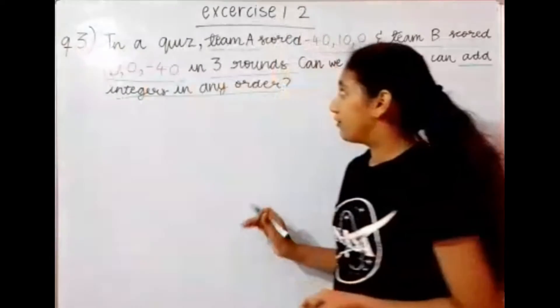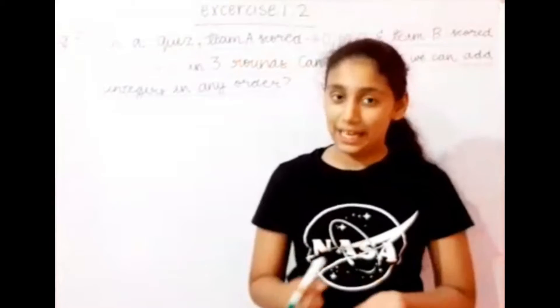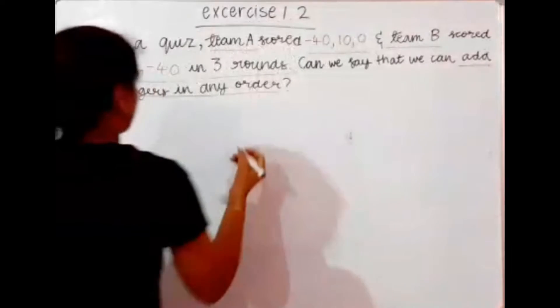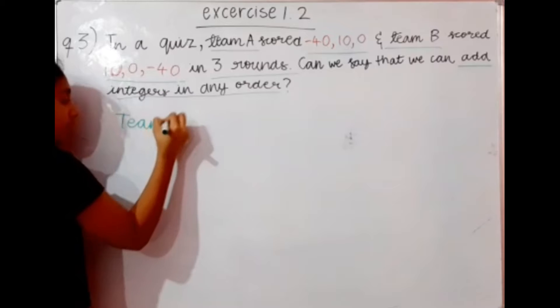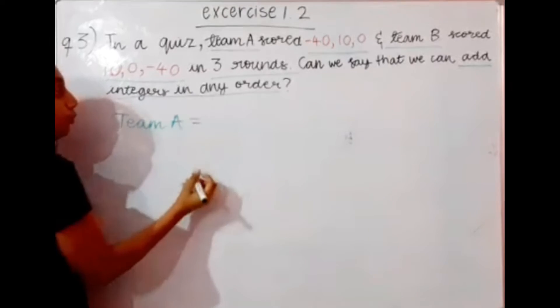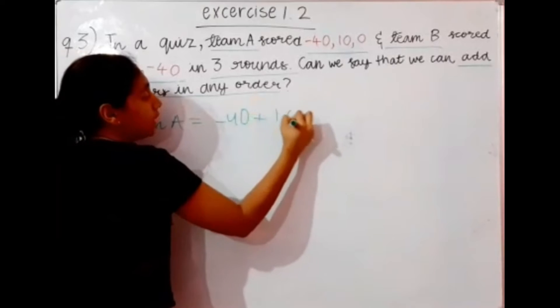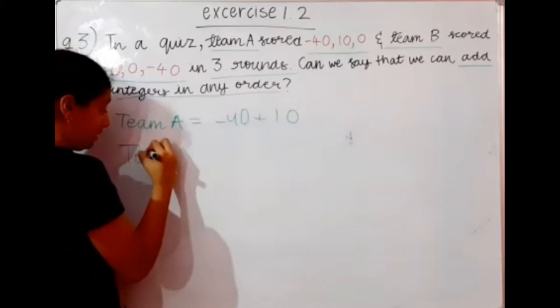Now, over here, first we will add team A scores, and then team B scores. If the answer comes out to be the same, then we can give our answer. So first we write, team A equals minus 40 plus 10, because 10 plus 0 gives 10.